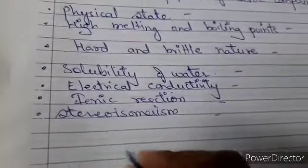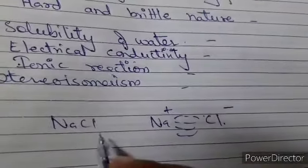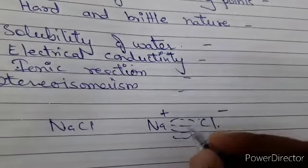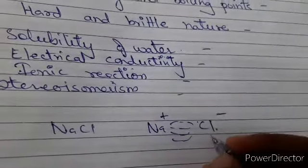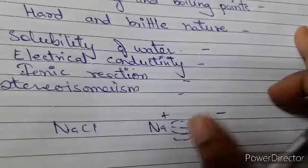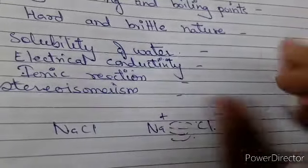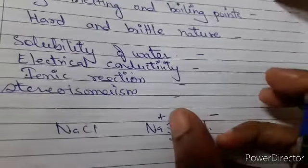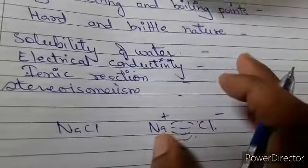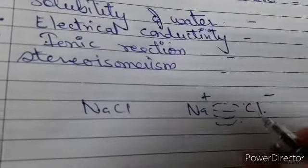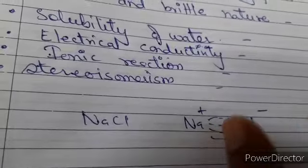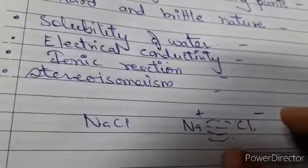For example, NaCl — sodium chloride — the ions are attracted and bounded by a strong electrostatic force of attraction. These oppositely charged ions are held closely together, locked in a proper position in a crystal. Ionic compounds are always held together by the electrostatic force of attraction, which gives them a three-dimensional structure — a crystal lattice.